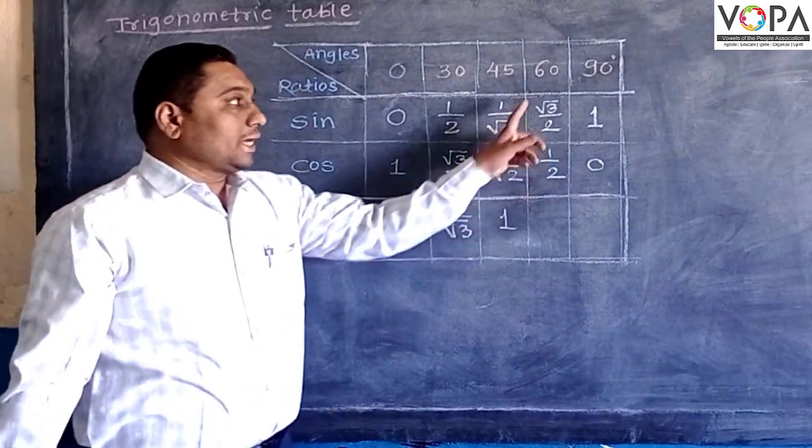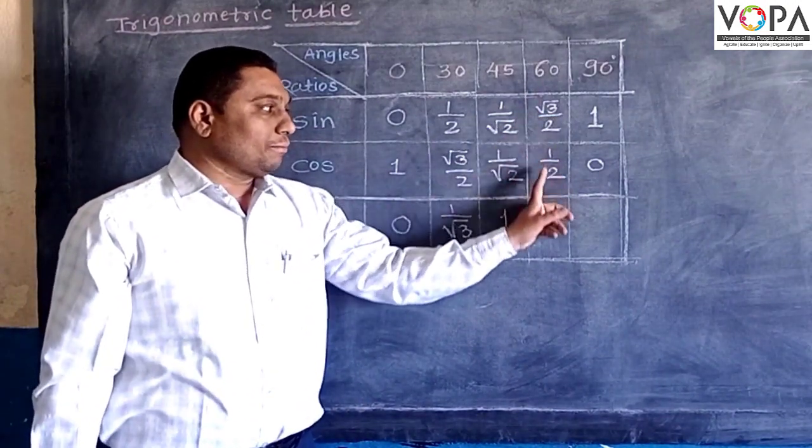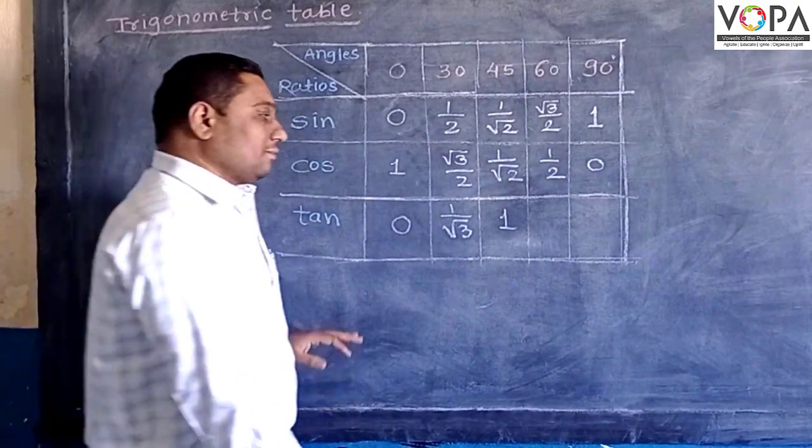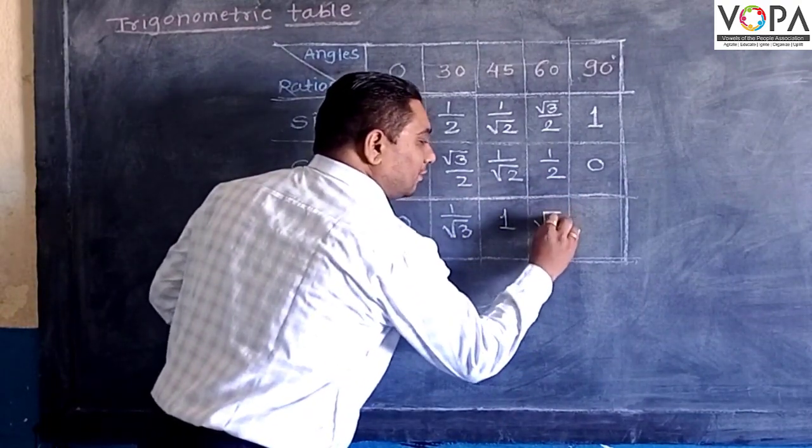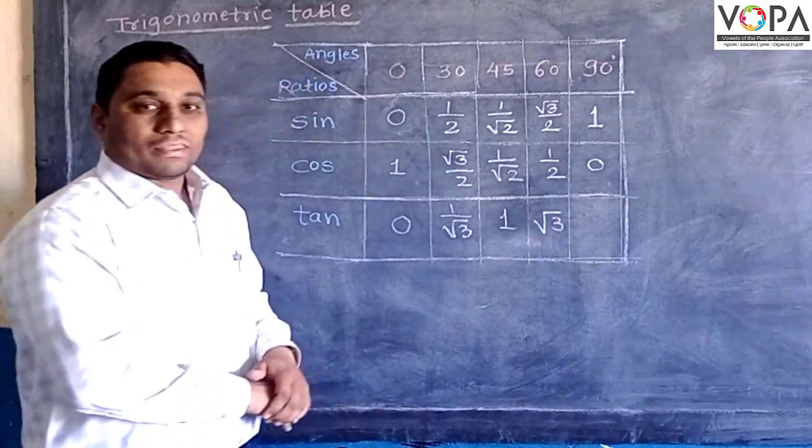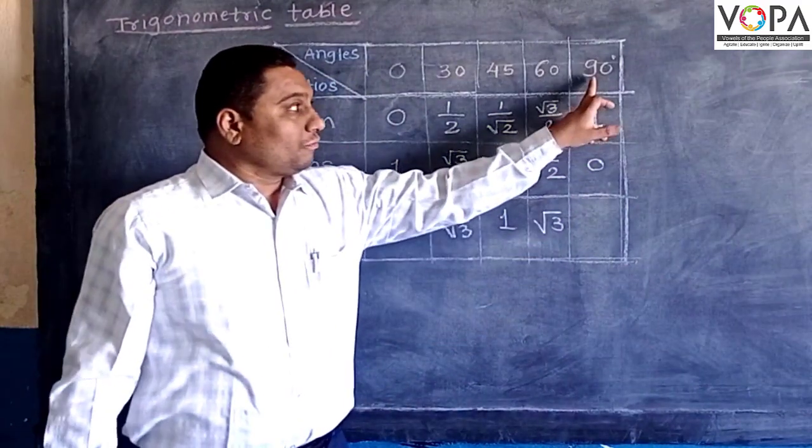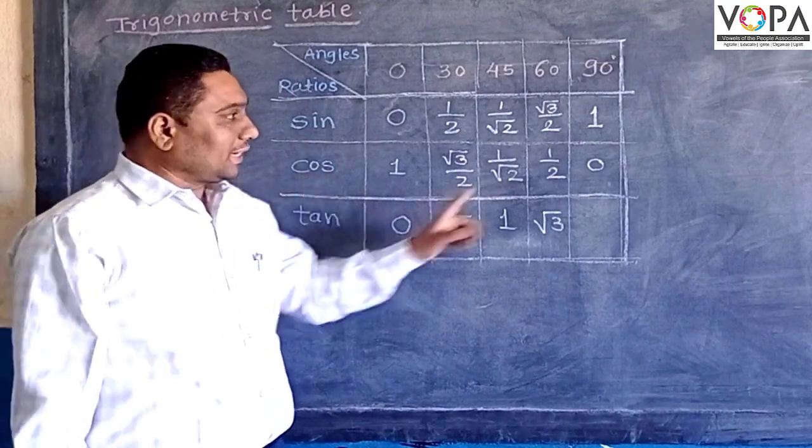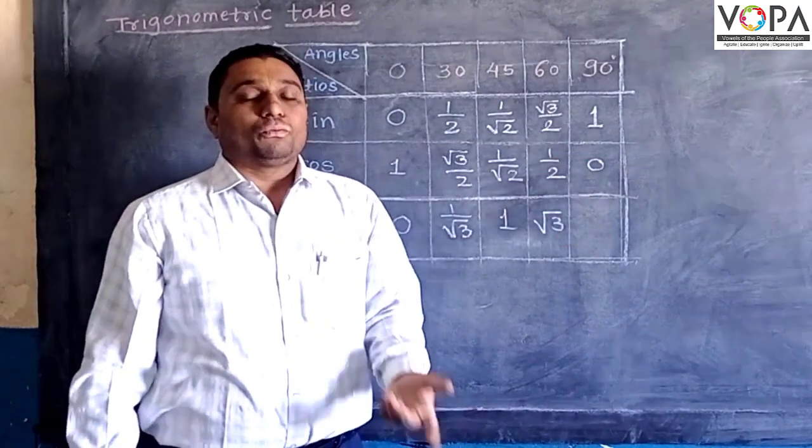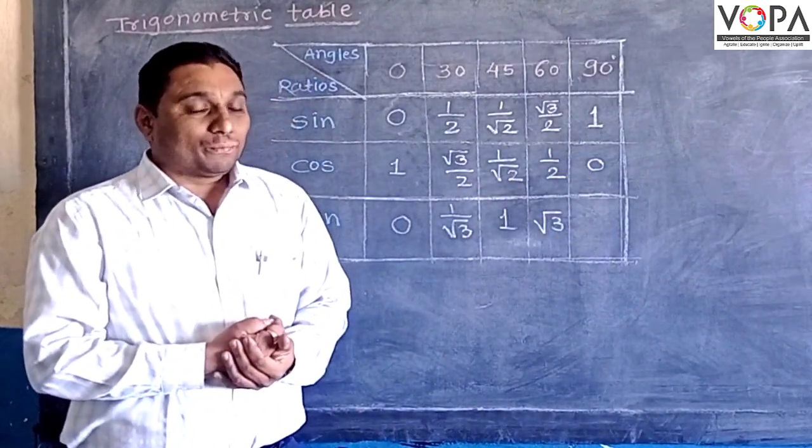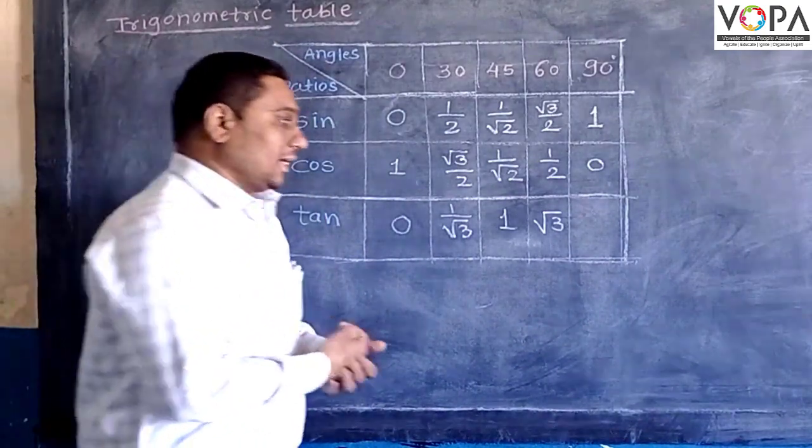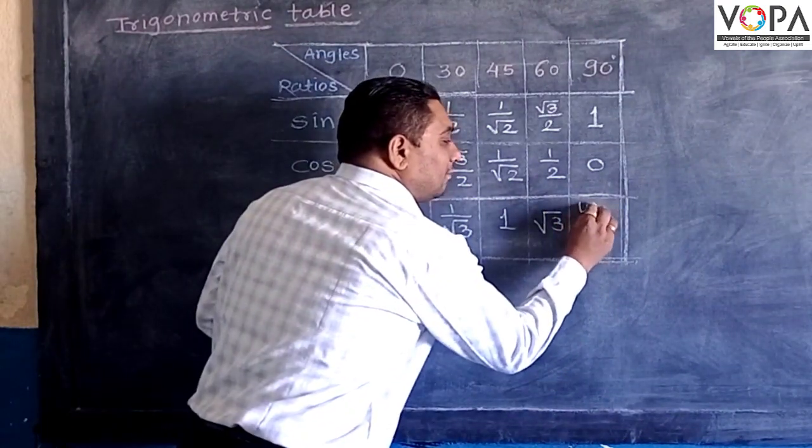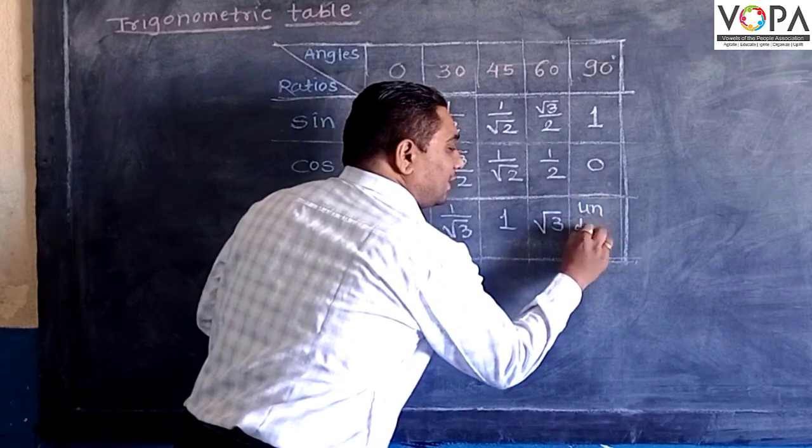Tangent of 60 degree: square root of 3 over 2 divided by one-half—both get cancelled—the value is square root of 3. Now for tangent of 90 degree: sine over cosine is 1 over 0. We cannot calculate 1 over 0, so hence it is undefined. Here we can write it as an undefined value.